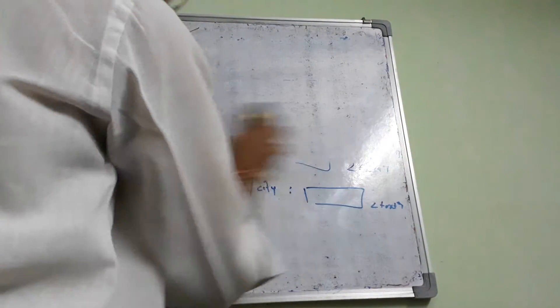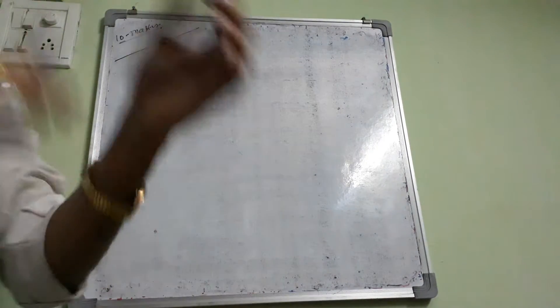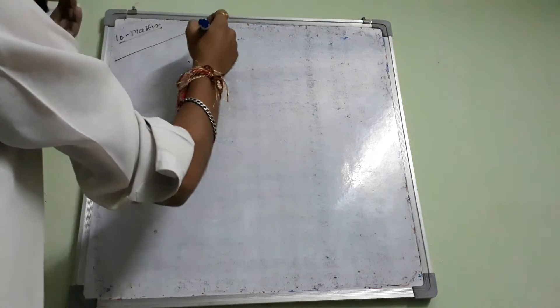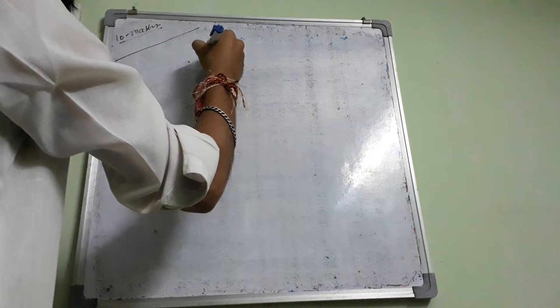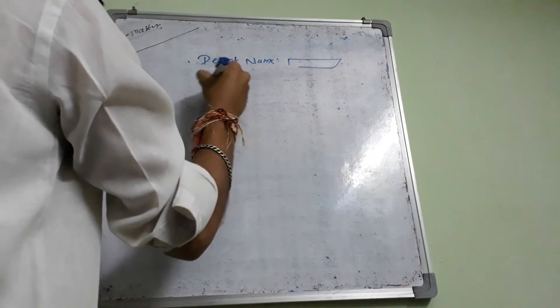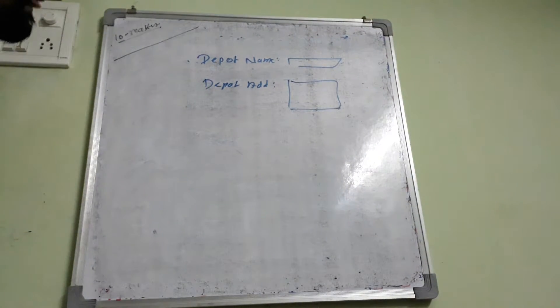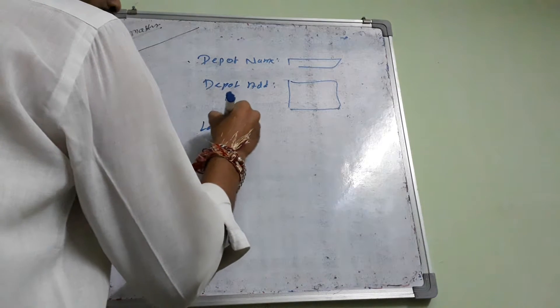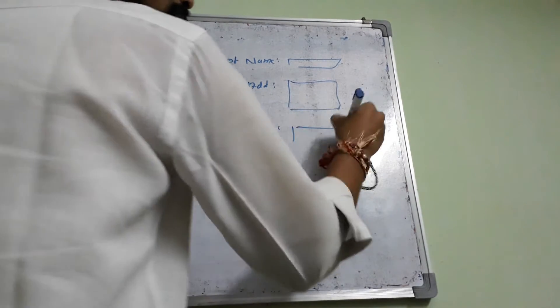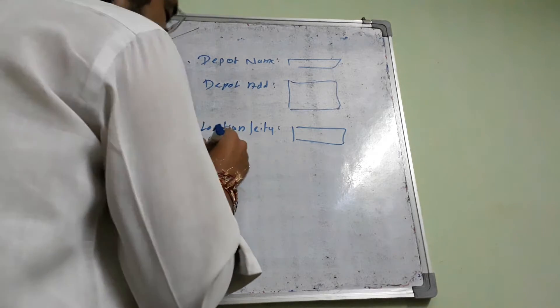I will go to depot master. Basically discuss locality wise depot team member assign. We have depot name, depot text box. Depot address text area. Location city, simple text box, address, database. Most important field: depot owner.